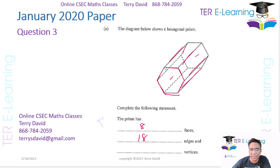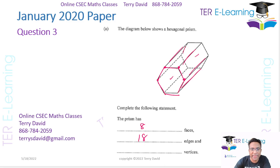And then in terms of vertices, we're looking at these points here. When you count all the vertices, I'm going to get a total of 12. You have one, two, three, four, five, and six on one hexagon, and another six on the other side. So that gives me a total of 12 vertices.